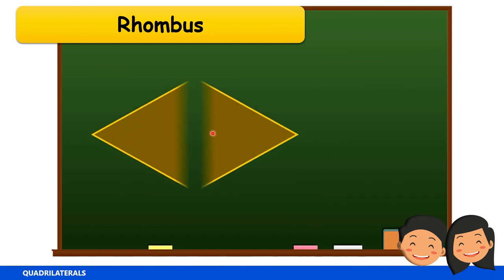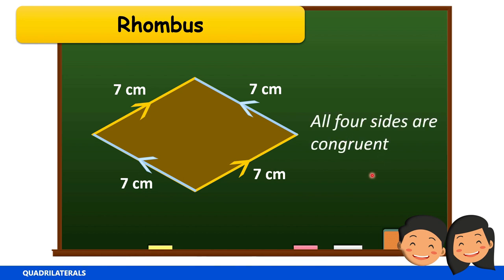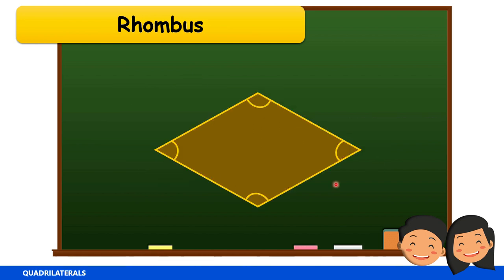A rhombus is a parallelogram. Opposite sides in a rhombus are parallel, but all four sides of a rhombus are congruent — for example, each side of this rhombus measures 7 centimeters. Now let's talk about the angles in a rhombus: opposite angles in a rhombus are congruent.